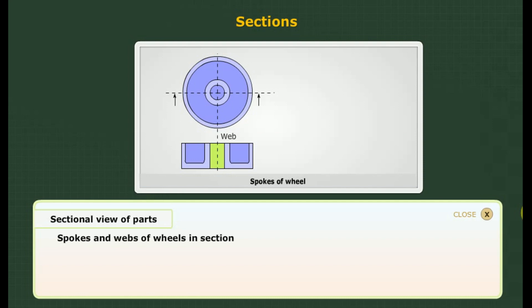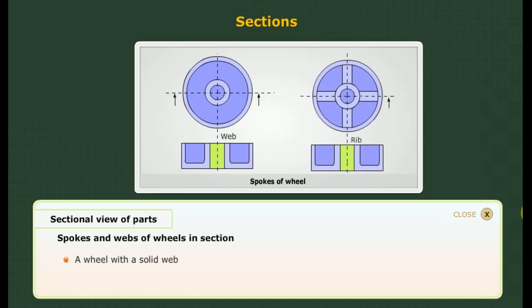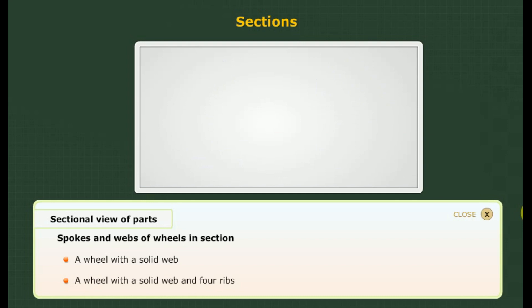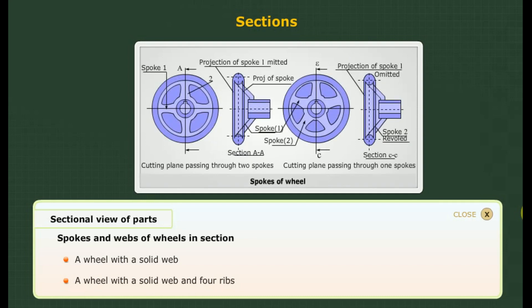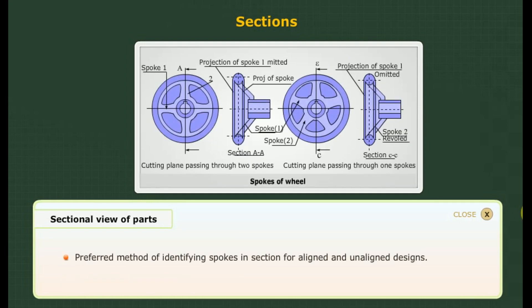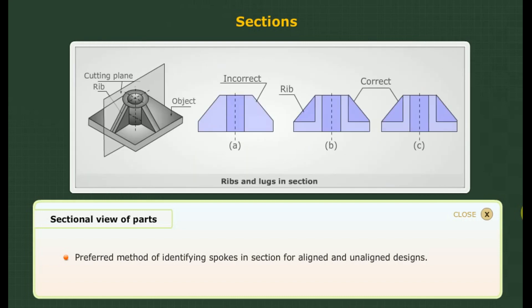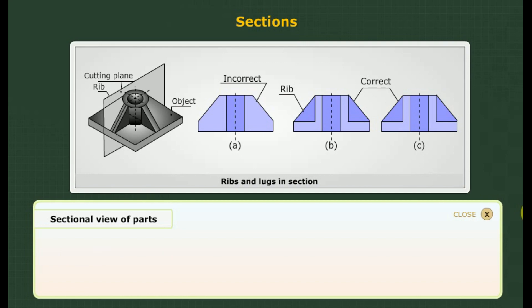Spokes and webs in section: A wheel with a solid web, and a wheel with a solid web and four ribs which is sectioned, are shown here. The preferred method of identifying spokes in section for aligned and unaligned designs is also shown.